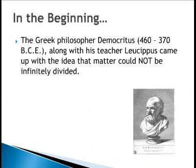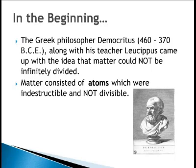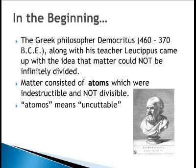The Greek philosopher Democritus, who lived between 460 and 370 BCE, along with his teacher Leucippus, came up with the idea that matter could not be infinitely divided. There had to be a point at which we got to the elementary particle that was not divisible. He called this elementary particle the atom, and he believed atoms were indestructible and not divisible. Atomos is the Greek word meaning uncuttable, indivisible.